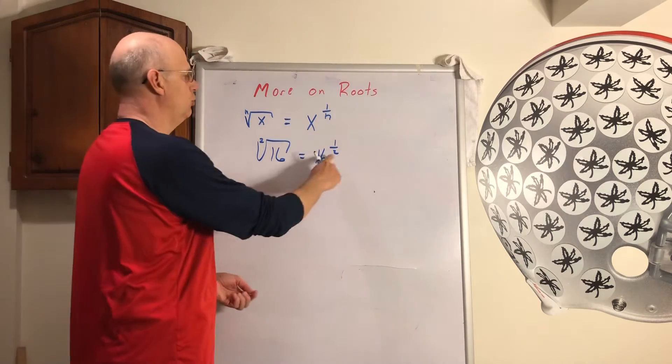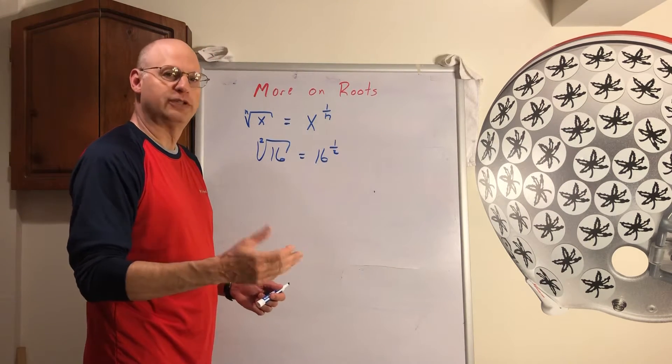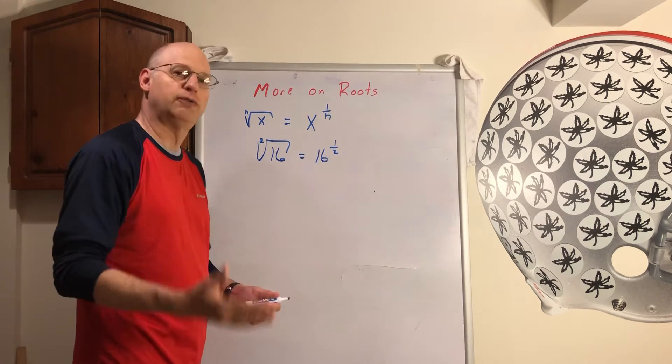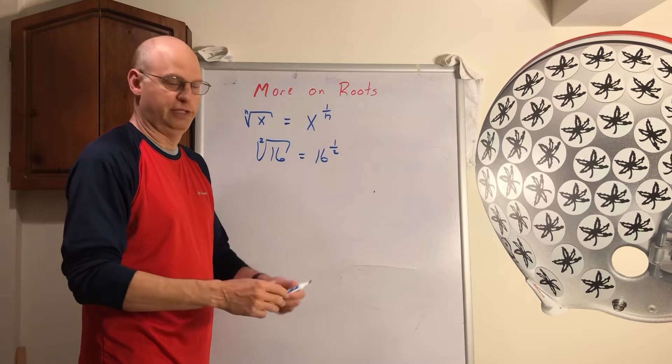If this was the cubed root, you would have to say, well what do you have to multiply by itself three times to get it? And if there's a little 4 there, it's really called the 4th root. What do you have to multiply by itself four times to get it?